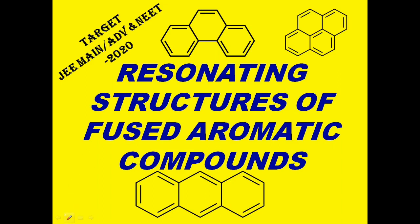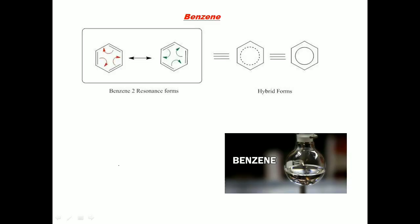Hello students and friends, in this video let us discuss resonant structures of fused aromatic compounds. We know that benzene has two resonant structures. In these two resonant structures, there is a delocalization of the pi electrons and these two structures are equal in energy. As a result, benzene has only one type of carbon-carbon bond length, which is 1.39 angstroms. All bonds are equal.